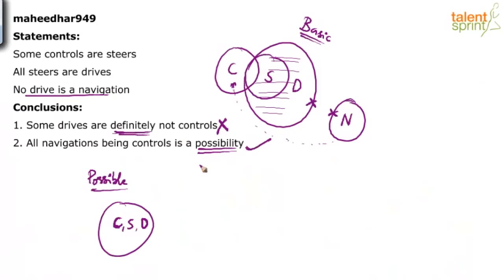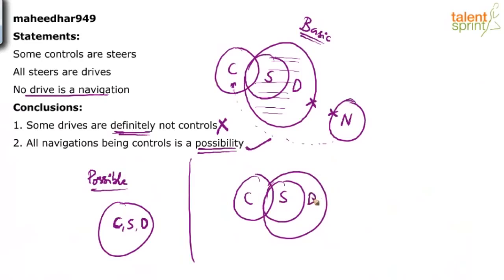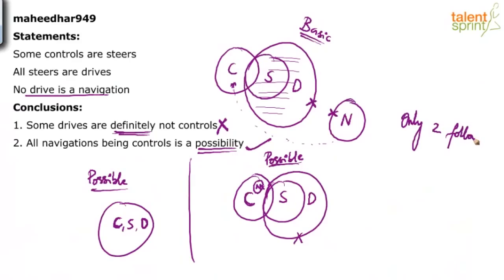Let me draw the diagram to show you. Some controls are steers, all steers are drives, and the last statement: no drive is navigation — so drive is here, and navigation drawn here without touching drives. Drives and navigations are not touching each other. In this possible diagram, all the navigations are controls. So all navigations being controls is possible — conclusion two is correct. The answer for this question is only conclusion two follows.